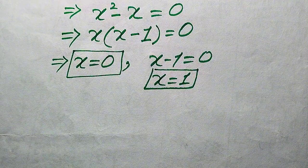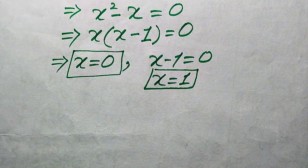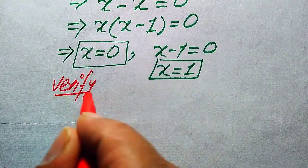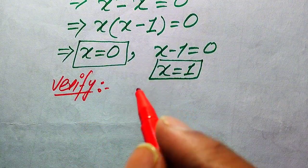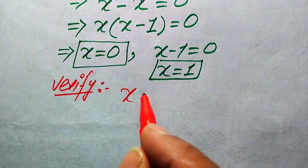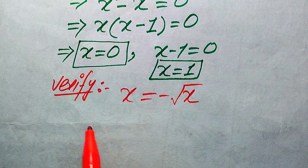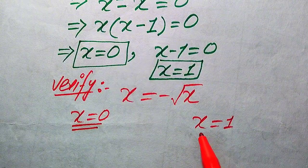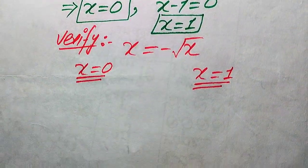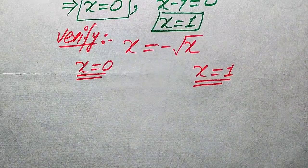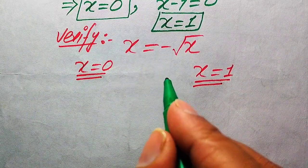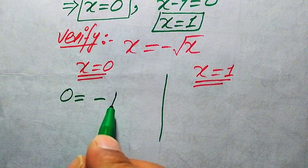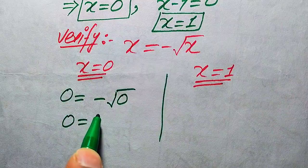Now we verify whether both roots are solutions of the given equation or extraneous roots. We copy down the given equation: X equals minus square root of X. First we verify X equals zero by substituting on both sides. It becomes zero equals minus times square root of zero.